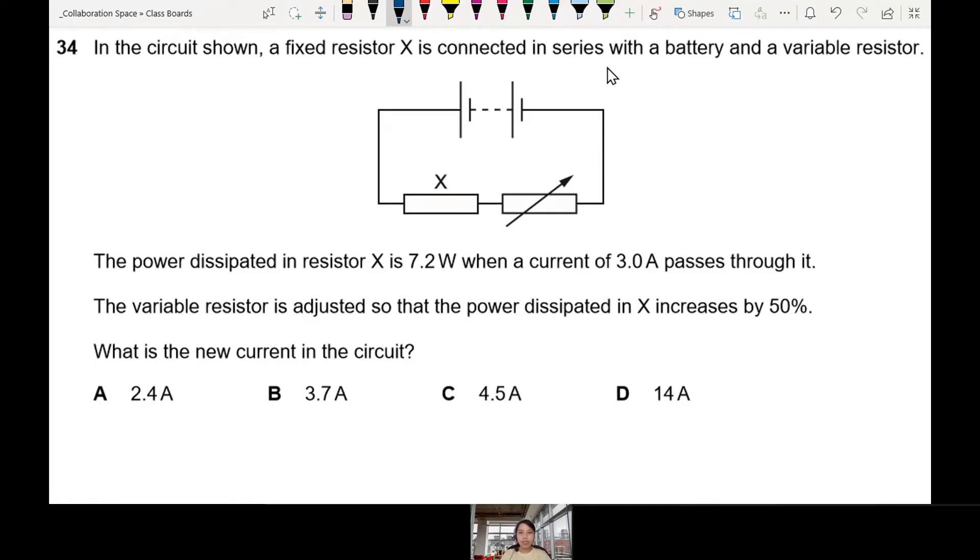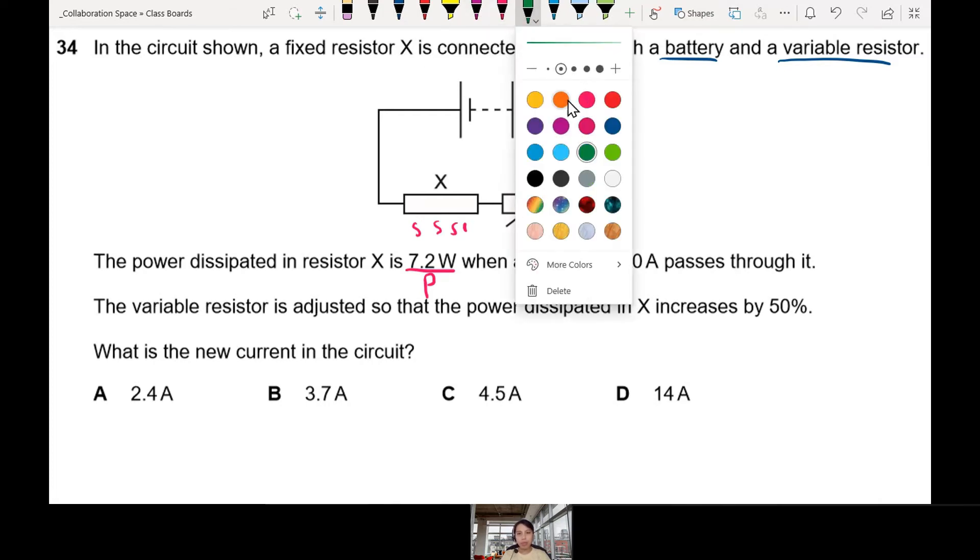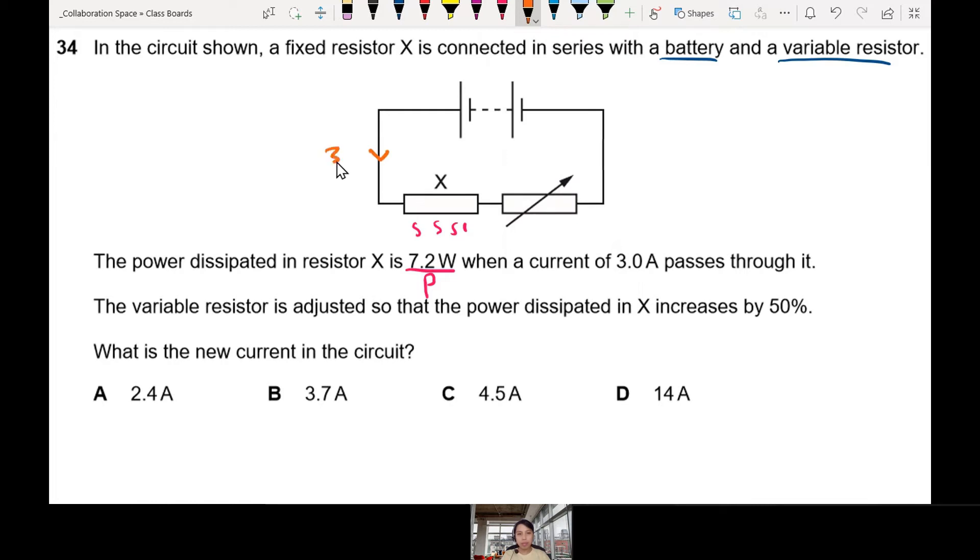In the circuit shown, a fixed resistor X is connected in series with a battery and a variable resistor. The power dissipated in resistor X is 7.2 watts when a current of 3A passes through it. Power means energy coming out, the resistor getting hot.